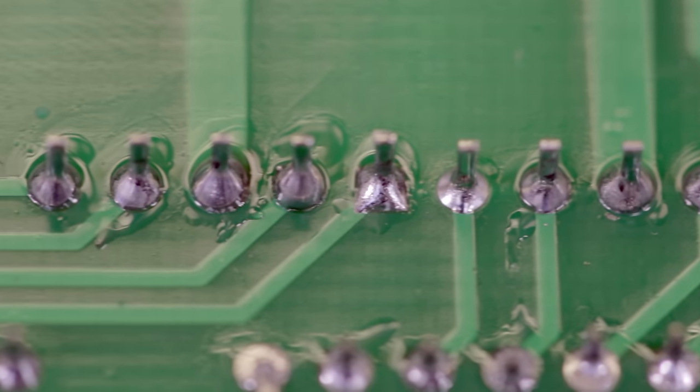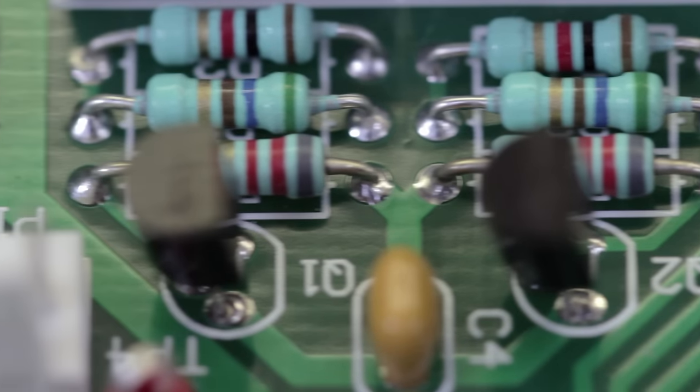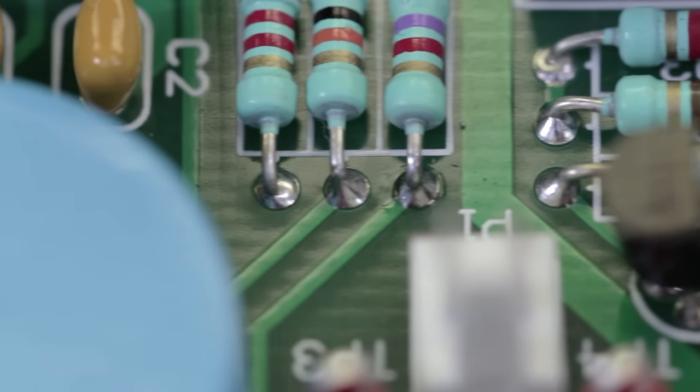Through hole soldering is when components are pushed through a hole in the board and soldered from the other side. The solder flows through the hole to make the best possible contact.